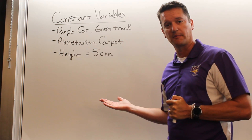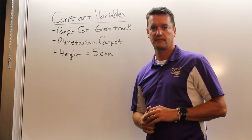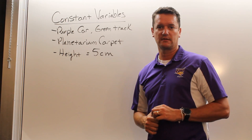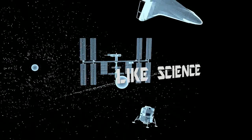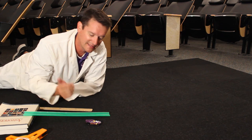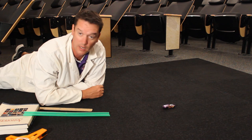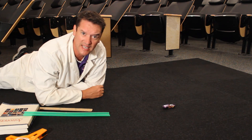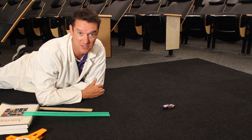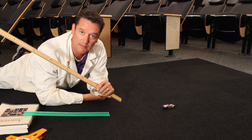Be sure you write down all the important things you're going to keep consistent in your experiment. Now we're ready for our first run — I'll take the purple car down the track. Now I need to measure the distance. I've got a meter stick and I'll lay it right from the end of the track to measure how far it goes.